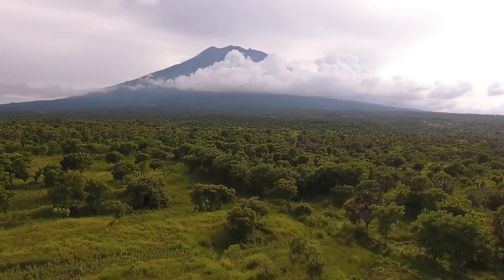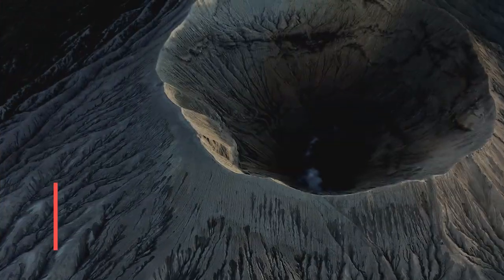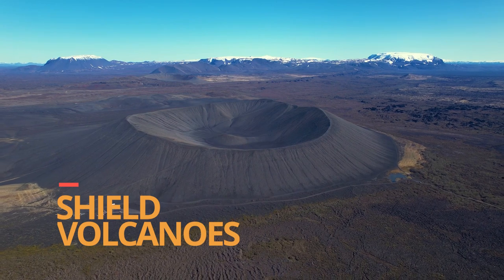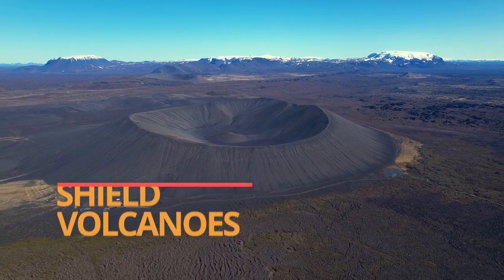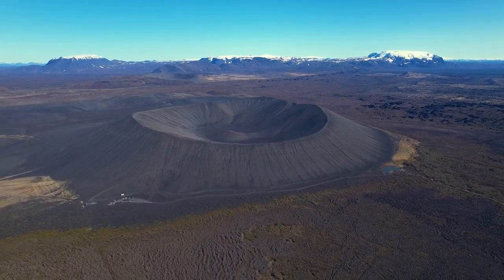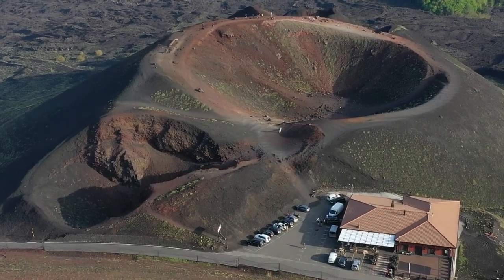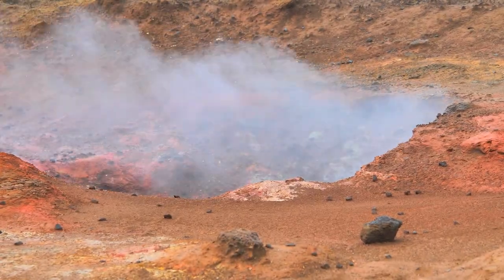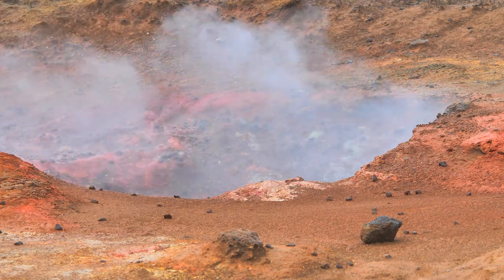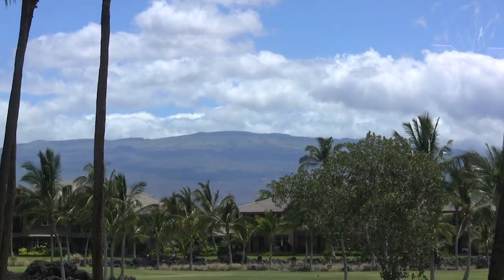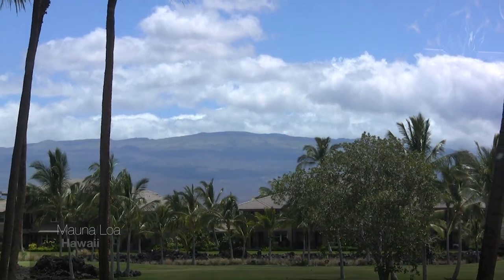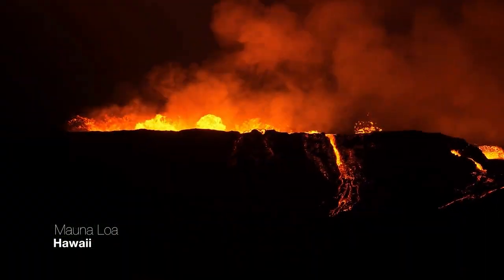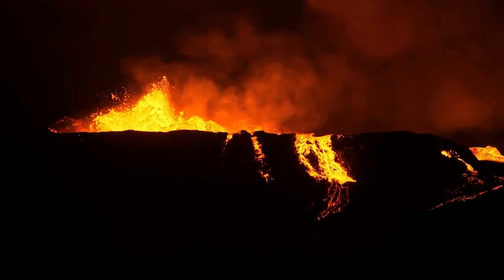There are three main types of volcanoes. Shield volcanoes are broad, low-profile volcanoes formed by the eruption of fluid lava. Named for their shape, which resembles a warrior's shield lying on the ground, these are the most common type on Earth, found in countries all over the world. An example is Mauna Loa in Hawaii, which stands at a shocking 13,677 feet tall.